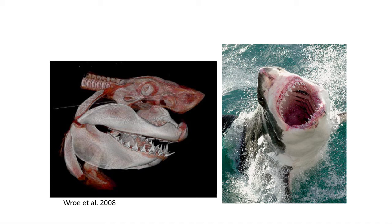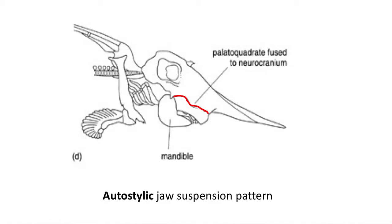The hyomandibular acts as a lever to push the jaws forward. The last style of jaw suspension is the autostylic pattern, where the palatoquadrate is fused into the neurocranium such that the lower jaw moves up and down. This style is found in the chimaera chondrichthians.